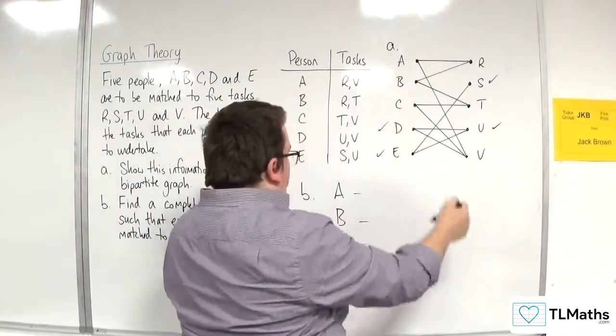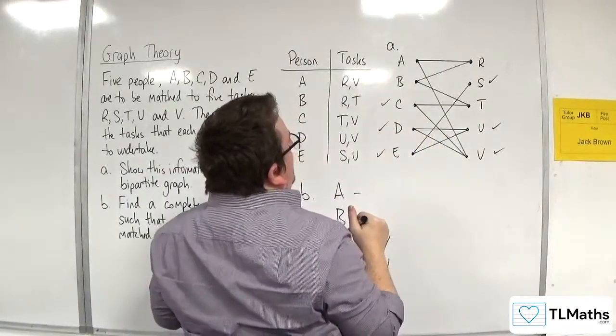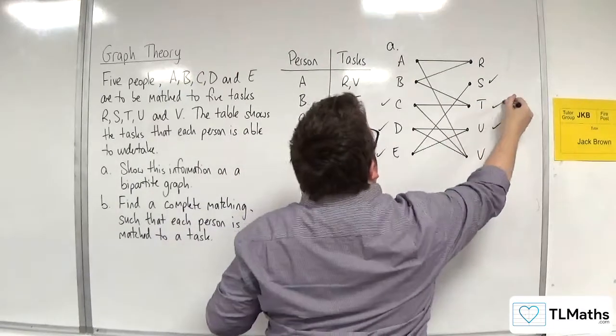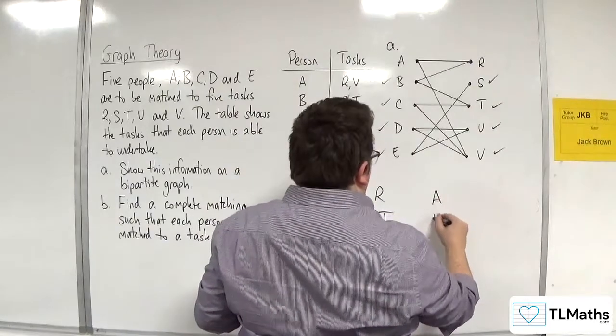So we've either got C with V. That connects those two. And then we've got B and T, and then A and R.